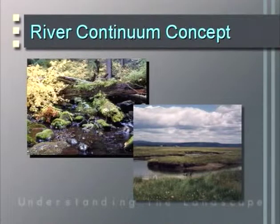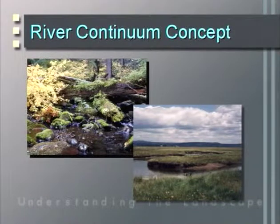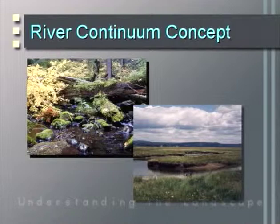A common misconception is that the river continuum concept requires all streams to have wooded riparian areas — it doesn't. It simply requires assuming the appropriate type of terrestrial ecosystem. At its core, the concept gives you a model for what to expect for a given river size with a given type of terrestrial interaction. The value of the concept is to order your thinking; you then go into the field to test whether the real world works that way.